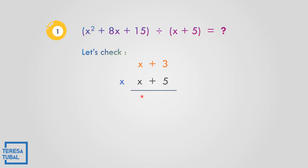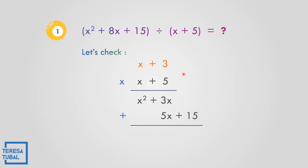Let us check by multiplying x plus 3 times x plus 5 to verify the answer is x squared plus 8x plus 15. x times x is x squared. x times 3 is 3x. 5 times x is 5x. 5 times 3 is 15. Adding: x squared, 3x plus 5x is 8x, and positive 15. So the answer is x squared plus 8x plus 15, confirming the quotient is x plus 3.